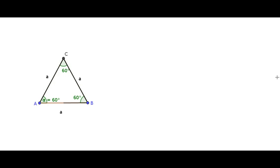For this, I am considering an equilateral triangle of any length. Here I am assuming it has length A. Now drop a perpendicular line from C to the base AB. This is the height of the triangle, and it divides the base into two equal halves and also bisects the angle C as 30 degrees each.